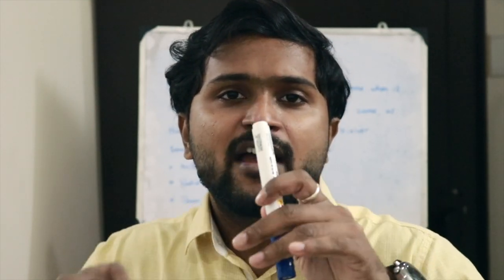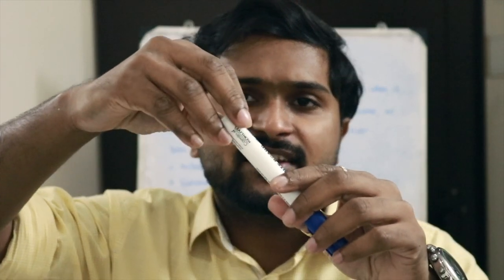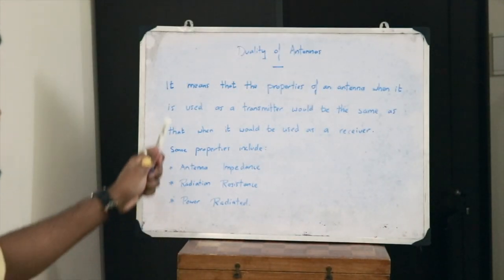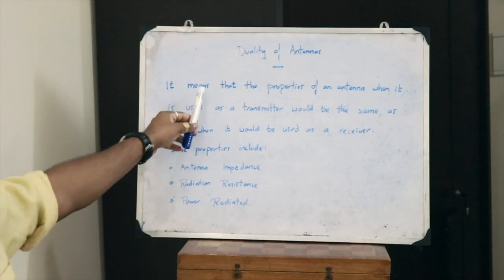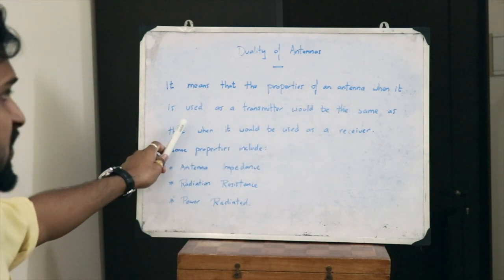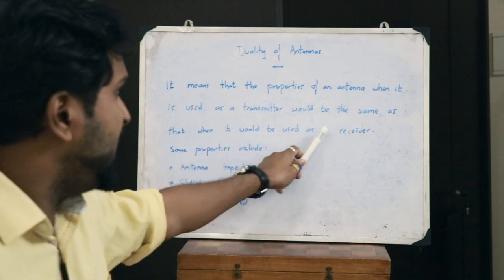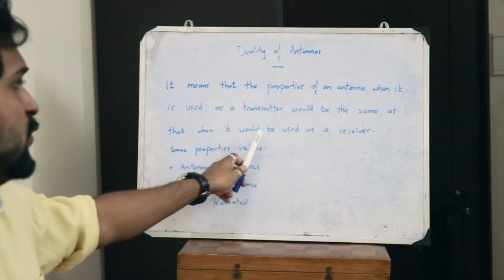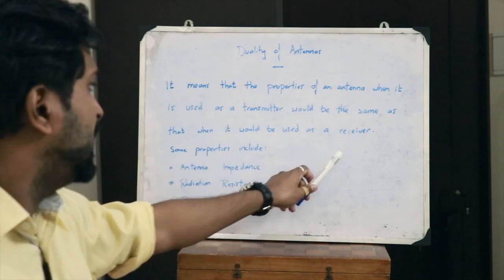So in layman's terms, an antenna would have the same properties when it acts as both the transmitter as well as a receiver. While defining it, it means that the properties of an antenna when it is used as a transmitter would be the same as that when it would be used as a receiver.